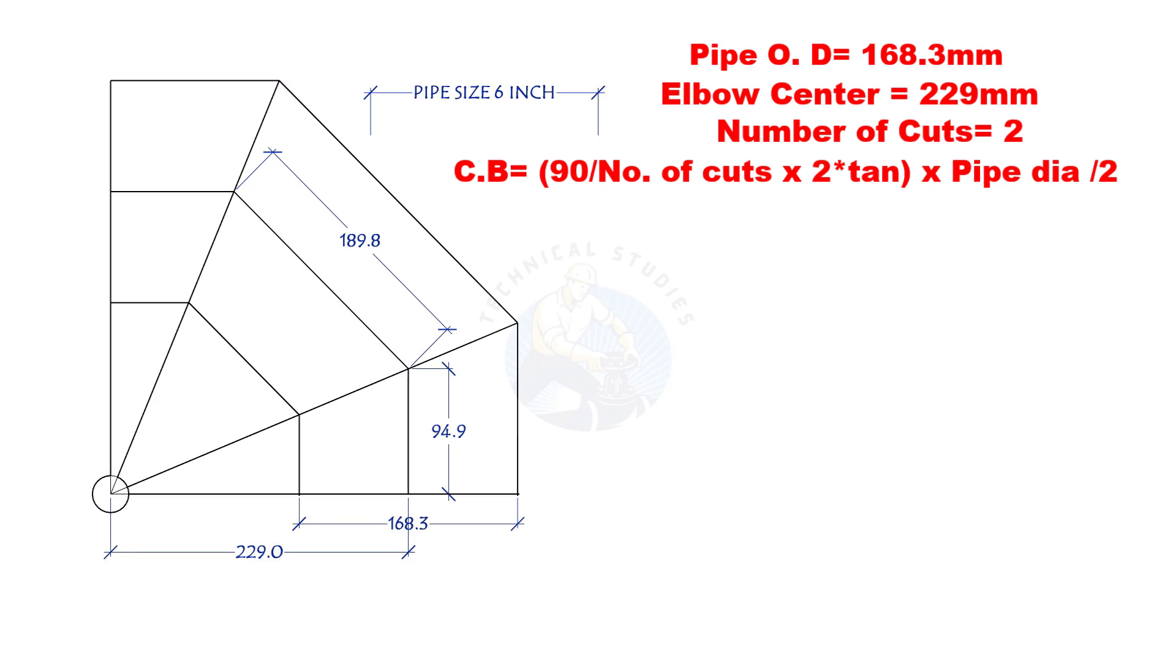Cutback is 90-degree divided by number of cuts into 2 multiplied by the half OD of the pipe. Half OD of the pipe is 84.15 millimeters.